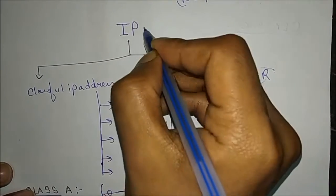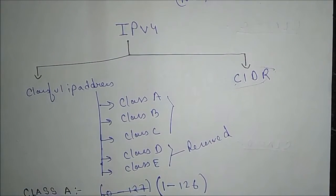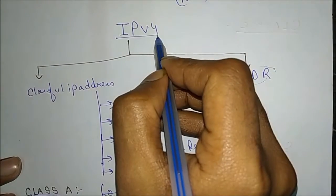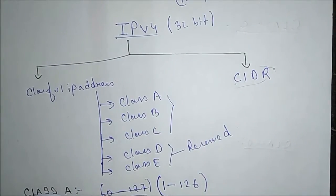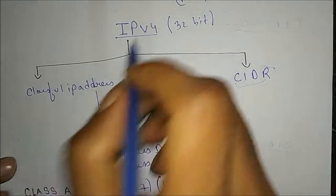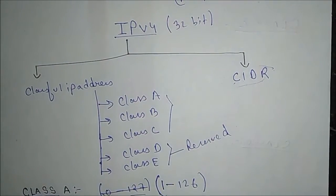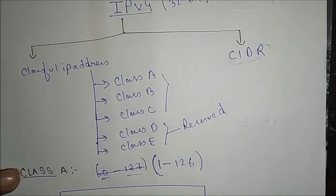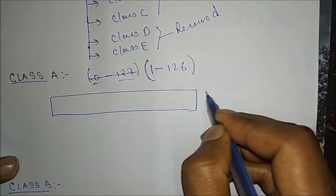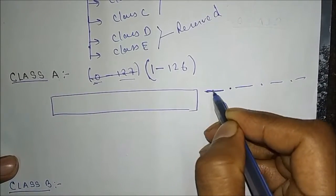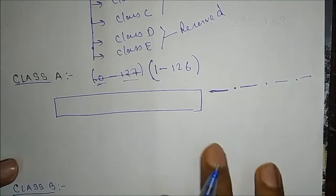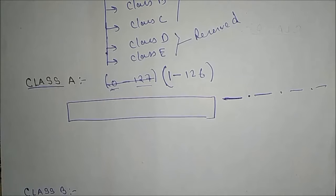We are talking about IP version 4. There are two types: IPv4 and IPv6. IPv4 is 32-bit and IPv6 is 128-bit. Since IPv4 is 32-bit, it contains 4 octets — each octet is 8 bits, giving us 4 × 8 = 32 bits total. This 32-bit address is divided into two parts: the Network ID and the Host ID.